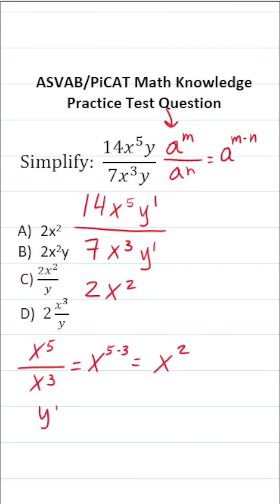So this becomes y to the 1st power over y to the 1st power. Again, according to the quotient rule, this becomes y to the 1 minus 1, which equals y to the 0.